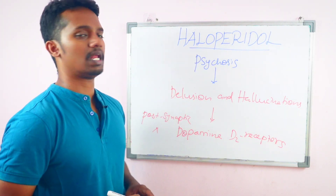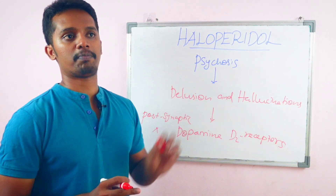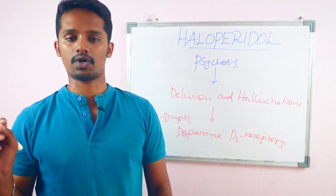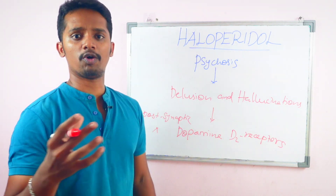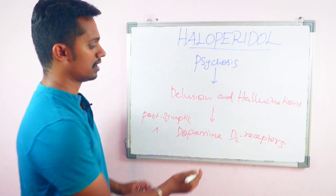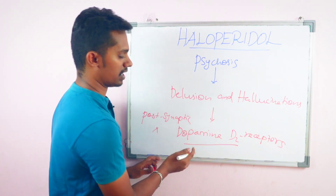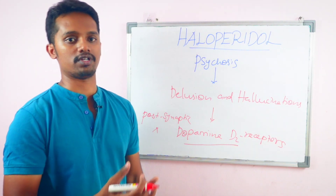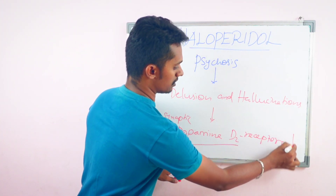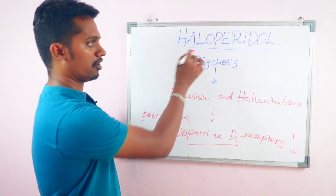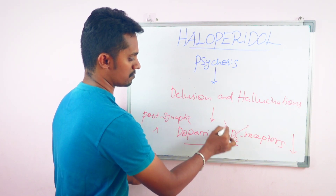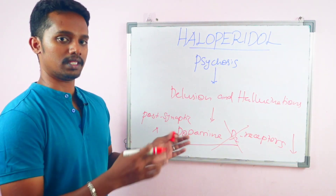So how does haloperidol work? Haloperidol has a simple, one-line mechanism. Haloperidol is a dopamine receptor antagonist — specifically, it is a dopamine D2 receptor antagonist. An antagonist blocks the receptor. So haloperidol blocks the post-synaptic dopamine D2 receptor.